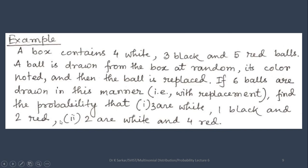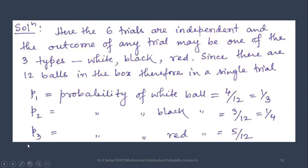Number 2, 2 are white and 4 red. Here, the 6 trials are independent and the outcome of any trial may be one of the 3 types: white, black, red.